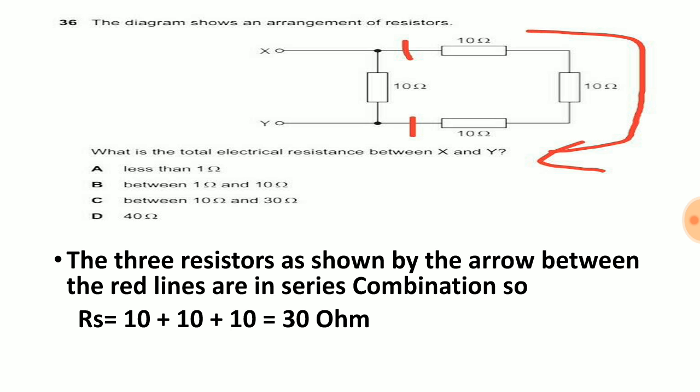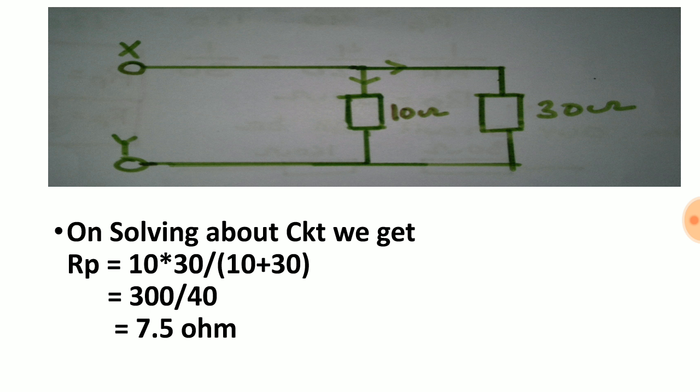Now I have written the three resistors as shown by the arrow between the red lines are in series combination. So our series will be 10 plus 10 plus 10 which will be 30 ohm. Now we can reduce the circuit like this. How? 30 ohm is the combination of three resistors.